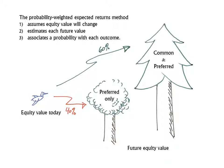A future value is estimated for each scenario. Each scenario is weighted according to its probability, and future value is discounted to present value. The value of the common stock is determined by the weighted average present value of these future scenarios.